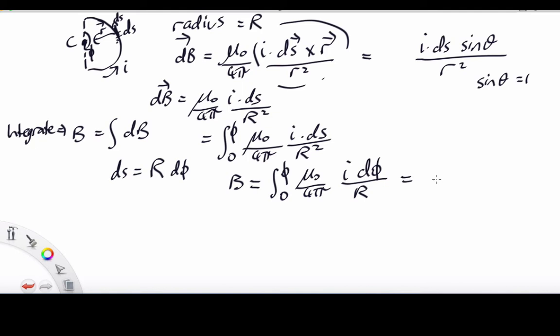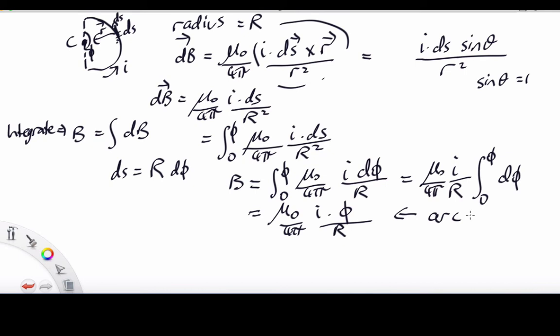Now let's just bring all the constants out the front. μ₀ is a constant, 4π is a constant, current we're counting as a constant, and R is a constant, so it's not leaving much. The integral from 0 to φ of dφ, and that is simply equal to φ. So we have μ₀ over 4π I times the angle in radians over R. So that is for an arc, which is defined by the angle φ.